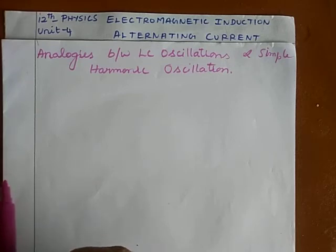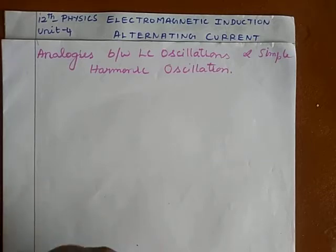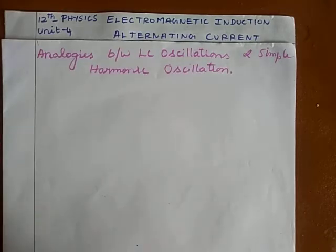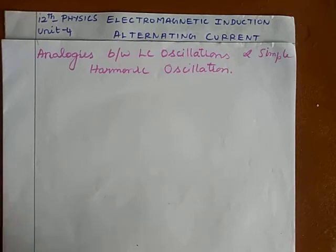If I consider a tank circuit consisting of an inductor of inductance L and a capacitor of capacitance C, and apply energy to the tank circuit, the energy will oscillate back and forth with a particular definite frequency. That is known as LC oscillation. Now let me compare the LC oscillation with simple harmonic motion.